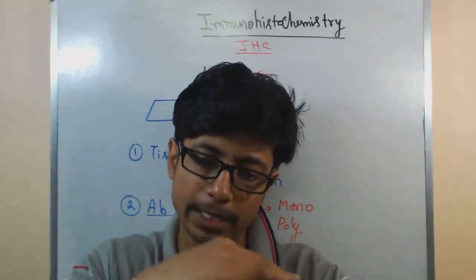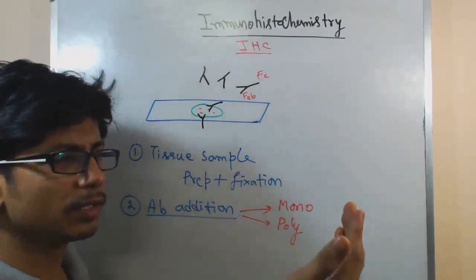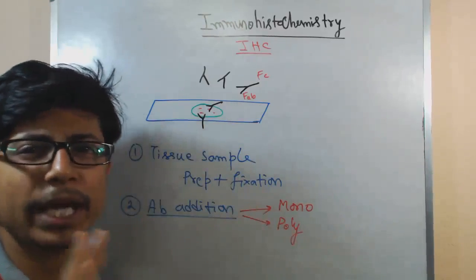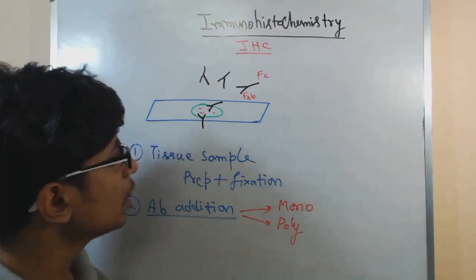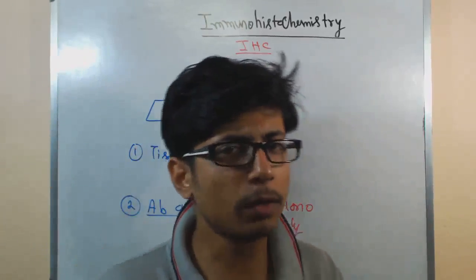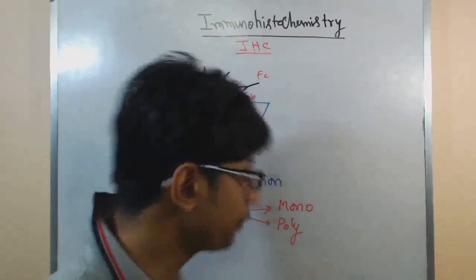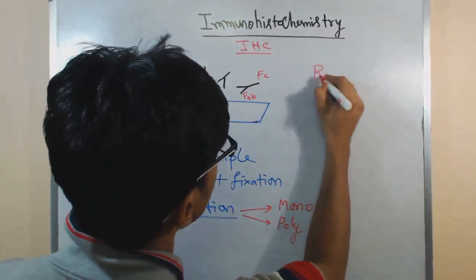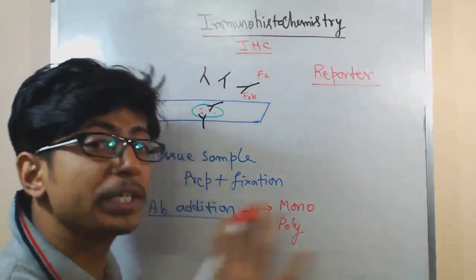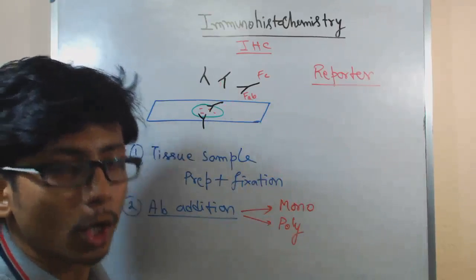We can see the tissue sample from outside — a very small, tiny tissue — but nothing else. No cell or antibody can be detected with the naked eye. So we don't know what is going on after adding antibody, whether they are bound or not bound. To understand that, we need certain reporter elements which will report us the exact phenomena — whether the antibody is bound or not.